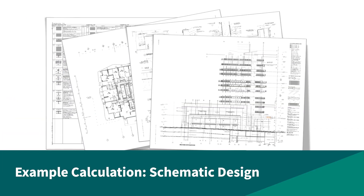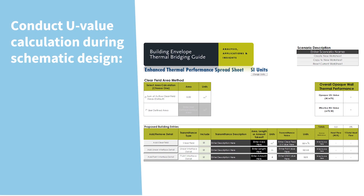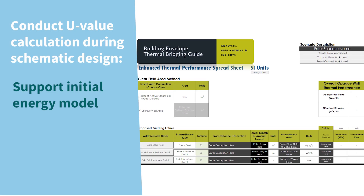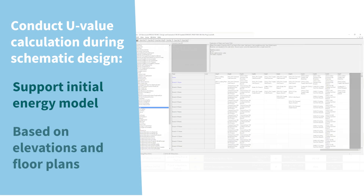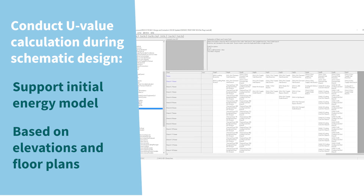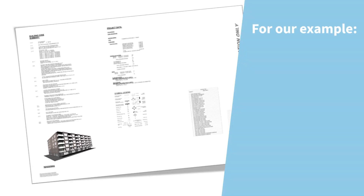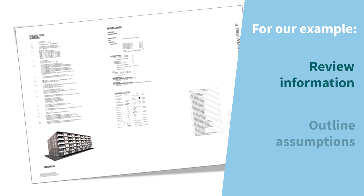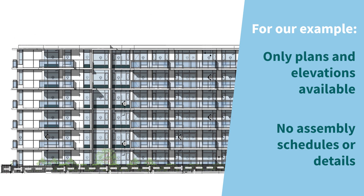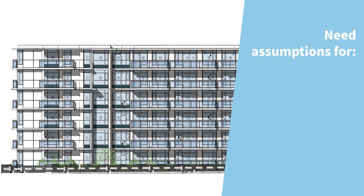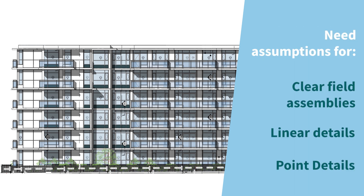During the schematic design, you can make an initial U value calculation at the same time as the building envelope energy model is developed. For the calculation at this stage in the design, we start with reviewing the available information and outlining our assumptions. There are no wall, roof, or floor schedules yet, or any building envelope details, so we know we'll have to make assumptions regarding the assemblies and thermal transmittances.